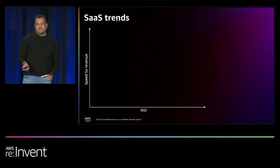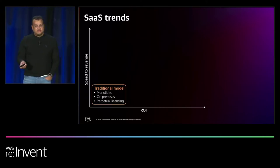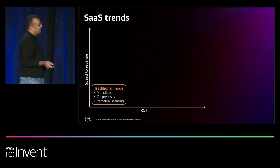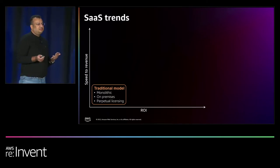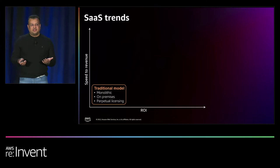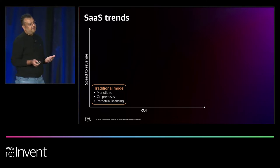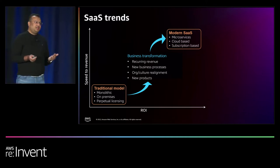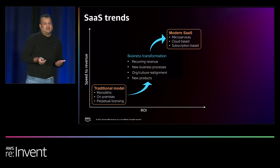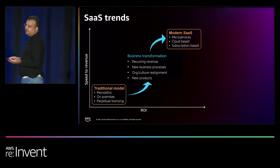We looked at what customers are expecting from you. Let's look at how businesses have actually been aligning themselves to those expectations. Over the last decade, businesses have been looking at their traditional business models — monolithic, typically on-premises, requiring large upfront capital expenditures and perpetual licensing models — and they have been on a transformation journey to make their applications more modular, based on microservices, adopting pay-as-you-go subscription models, and moving their applications to AWS on the public cloud.